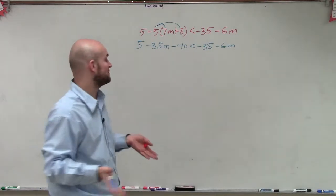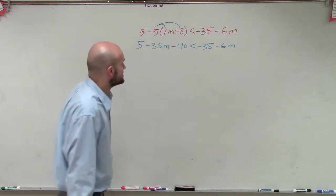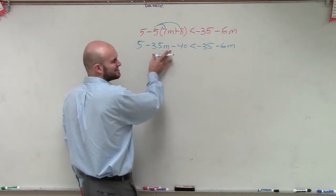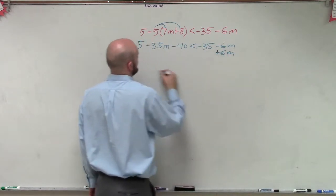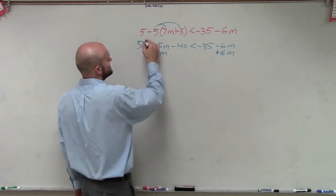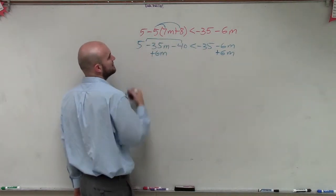Then I can decide which side I want to get my variables to. And it's kind of either way what you really want to choose. So I always like making my variable... Let's solve it for the left because I think it will make a little more sense. So I'll add 6m.